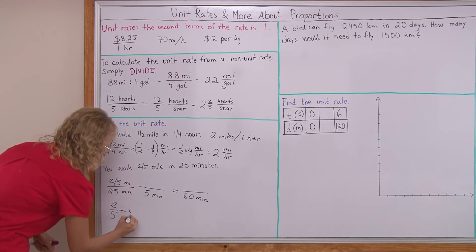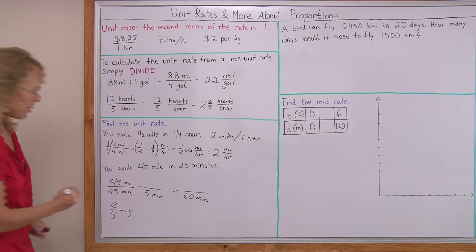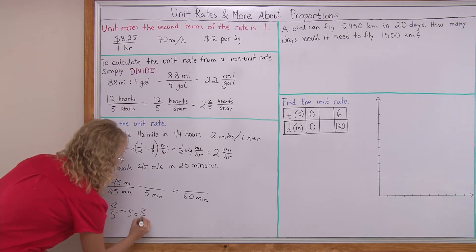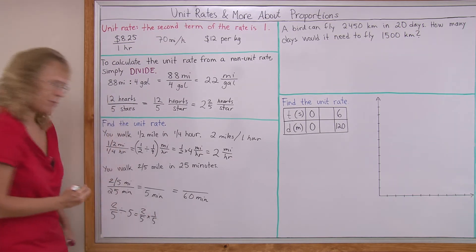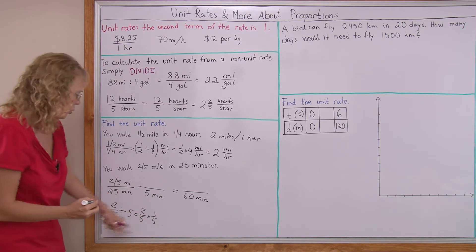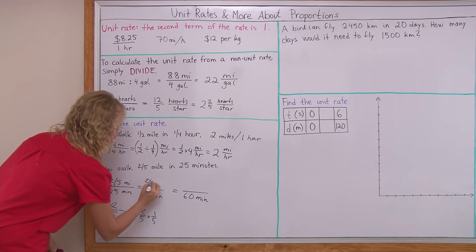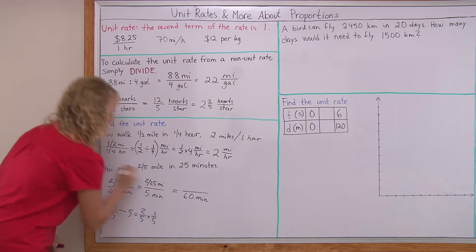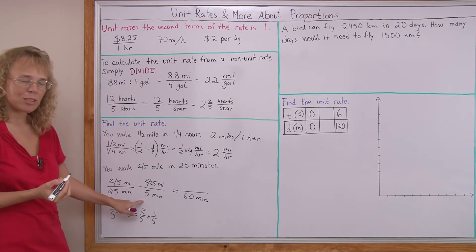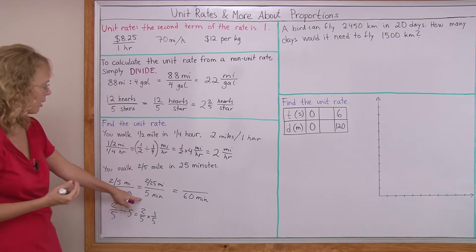Two-fifths divided by five is the same as two-fifths times one-fifth. So we get two over 25 miles per five minutes, if somebody's walking this slowly. It's a slow rate of walking.